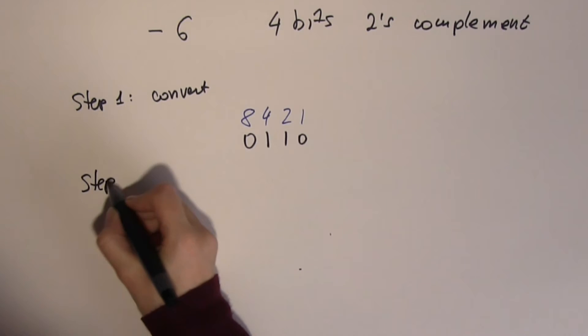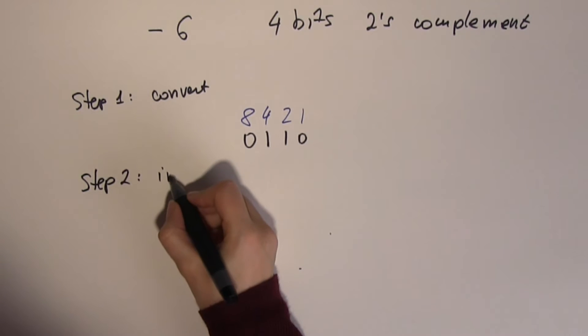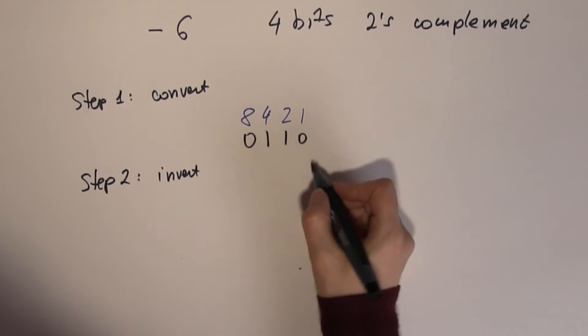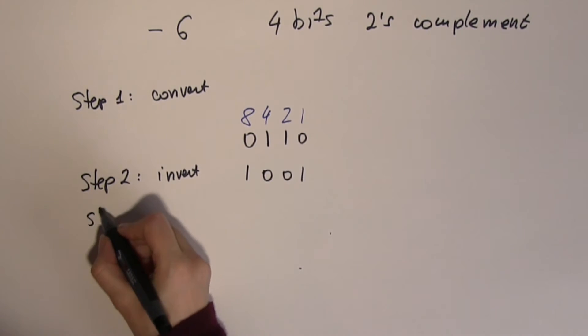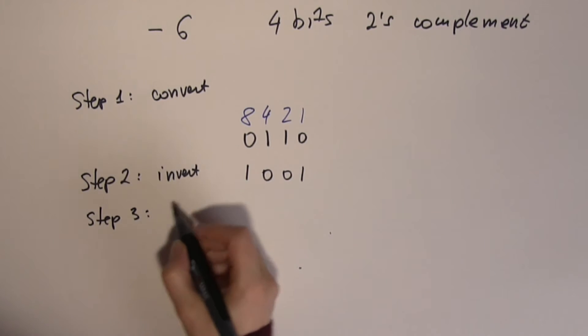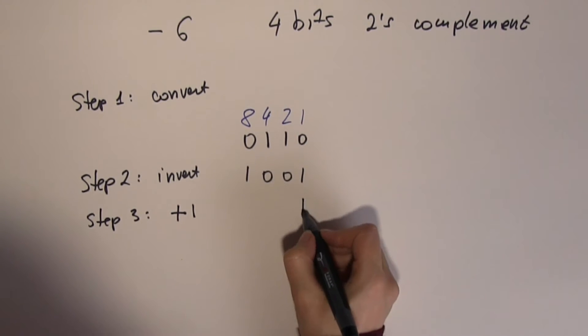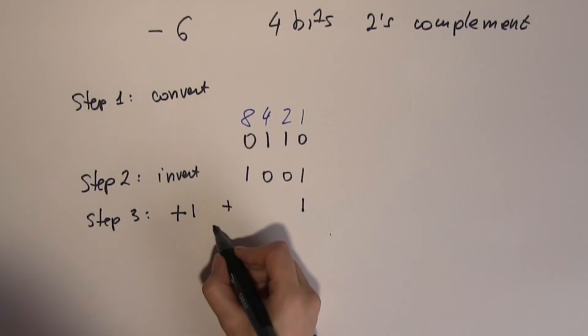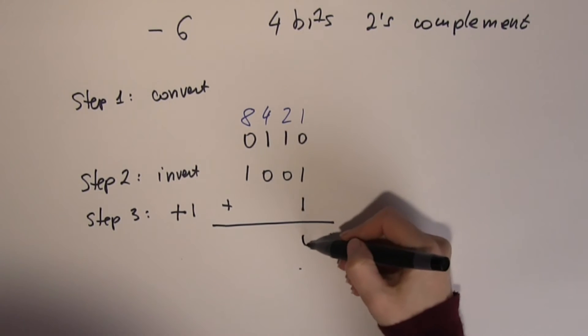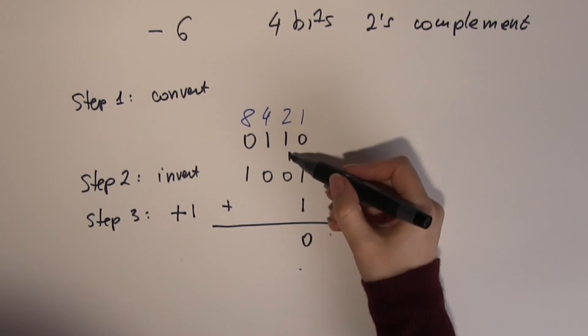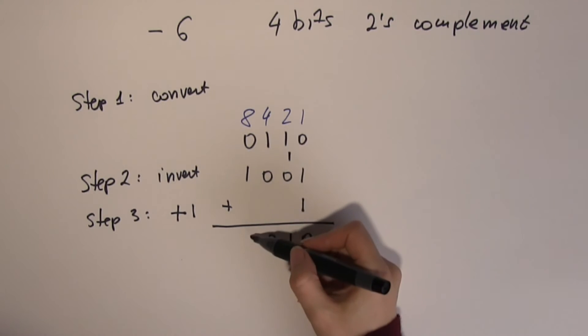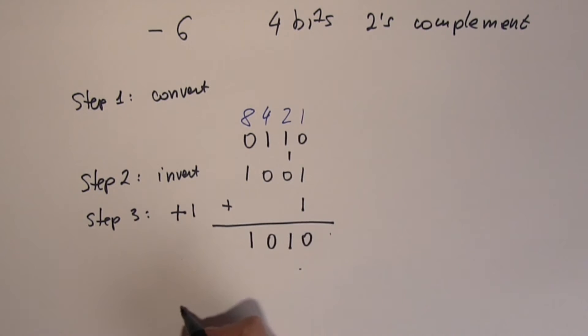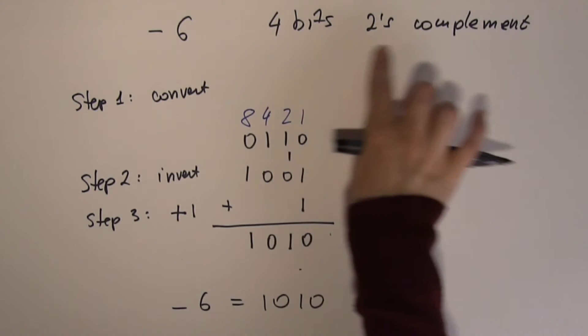Step 2: invert. 0's becomes 1's, and 1's becomes 0. Then the last step is plus 1. 1 plus 1 makes 0, carry the 1. 1 plus 0 makes 1. 0 plus nothing is 0. 1 plus nothing is 1. So minus 6 is the same as 1, 0, 1, 0 in 4-bit 2's complement.